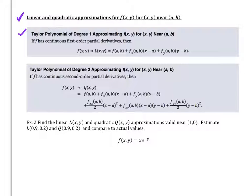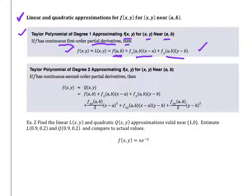Taylor polynomial of degree one: approximating f(x, y) near (a, b). If f has continuous first-order partial derivatives, we can approximate f(x, y) using a linear approximation, which looks like a point plus some sort of change. We take a starting value, then change in the x direction, then change in the y direction — that overall tells us how we're going to change.